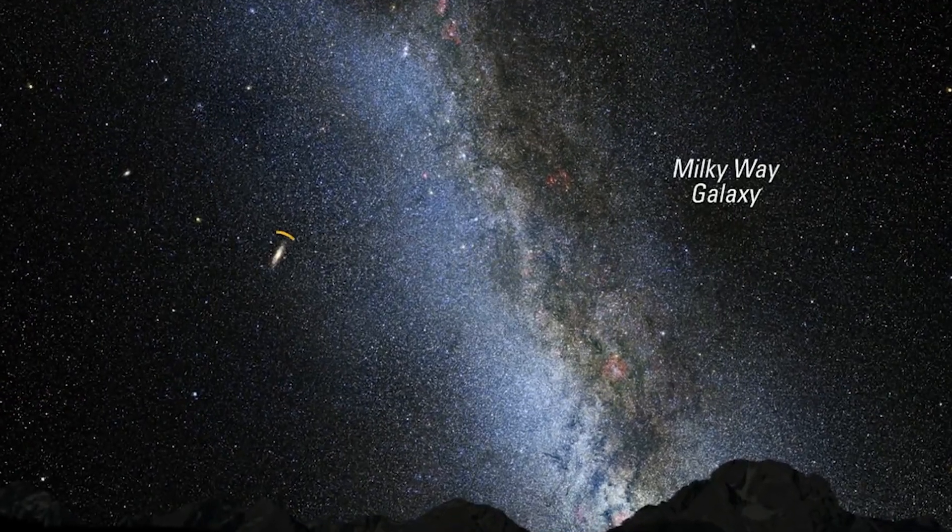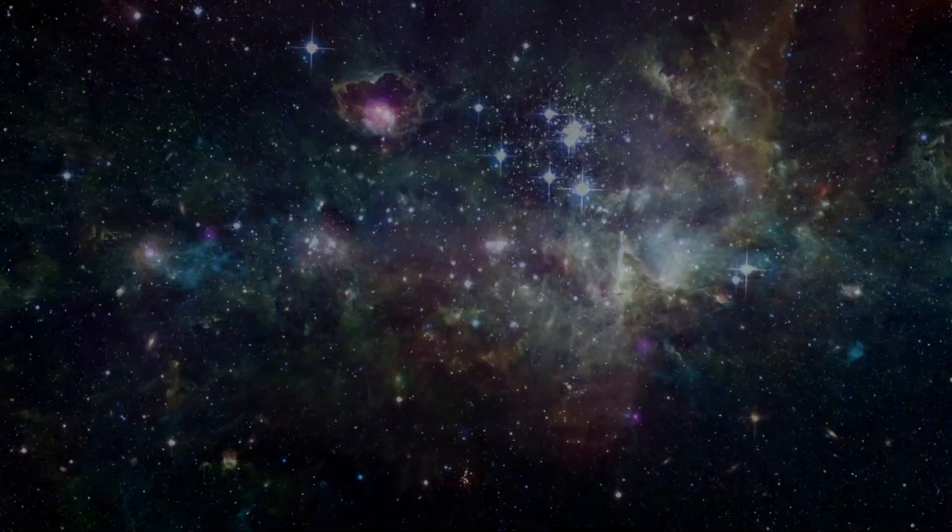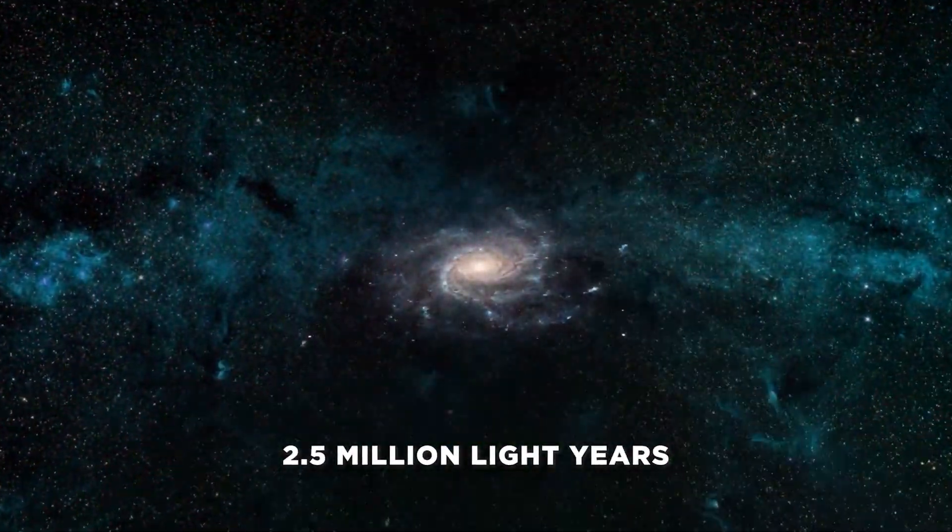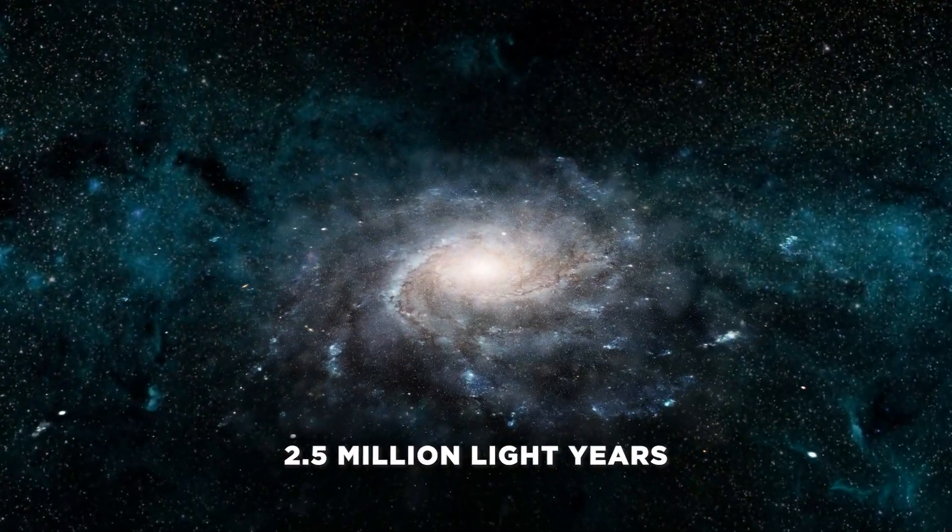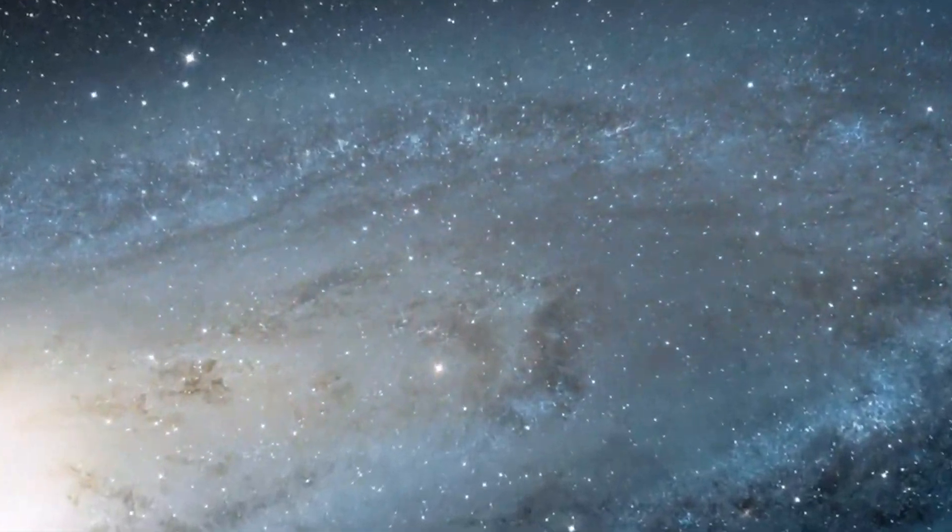Andromeda is visible to the naked eye and can be seen in the night sky as a faint misty blur. It's located about 2.5 million light-years from our own Milky Way, making it the most distant object that can be seen without using a telescope.